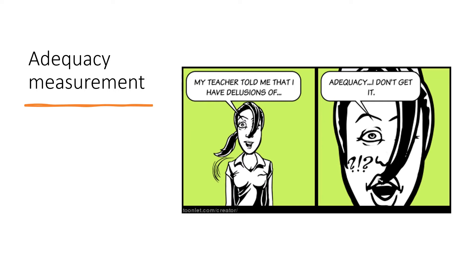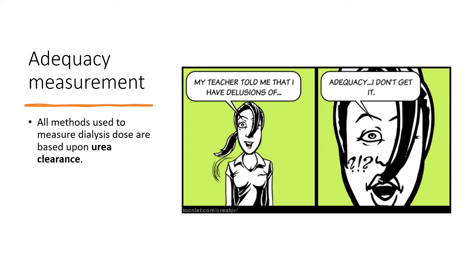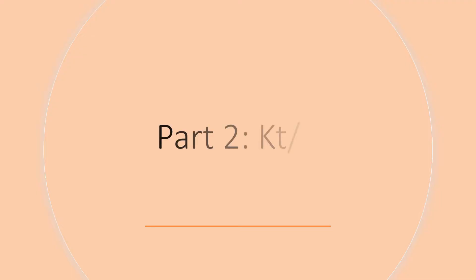So how do we quantify how well we are cleaning our patients' blood? This brings us to today's topic of dialysis adequacy. All methods used to measure dialysis dose are based upon urea clearance. Although the best method is not known, most nephrologists use Kt/V, but we also use something called URR or urea reduction ratio. Let's first focus on Kt/V.